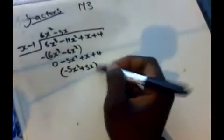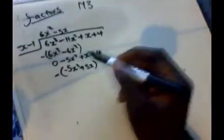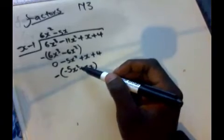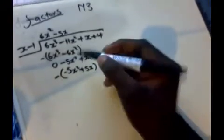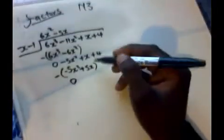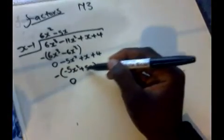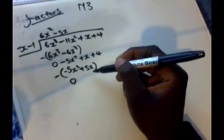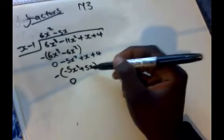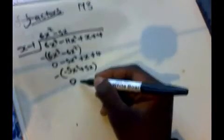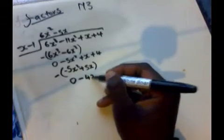We introduce our negative again. Negative 5x and negative 5x cancel each other, giving 0. The negative affects this negative, so grouping the like terms: x plus x minus negative 5x gives us negative 4x.